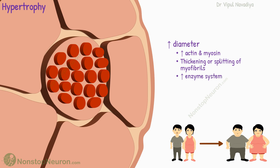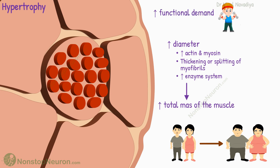Additionally, the enzyme system responsible for providing extra energy also increases. All this growth leads to an increase in the total mass of the muscle. Hypertrophy occurs in response to increased functional demands, such as weight lifting exercises or repetitive muscle contractions.